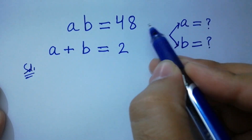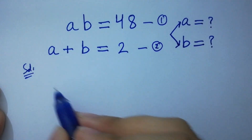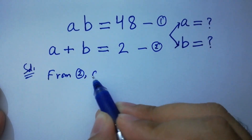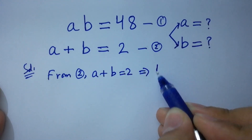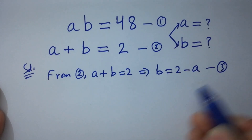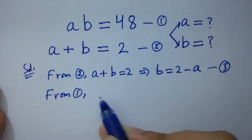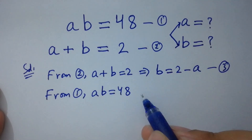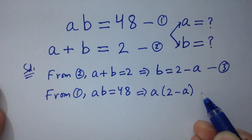Let ab equal to 48 be the first equation and a plus b equal to 2 be the second equation. From the second equation, a plus b equal to 2, so b equal to 2 minus a. Let this be the third equation.